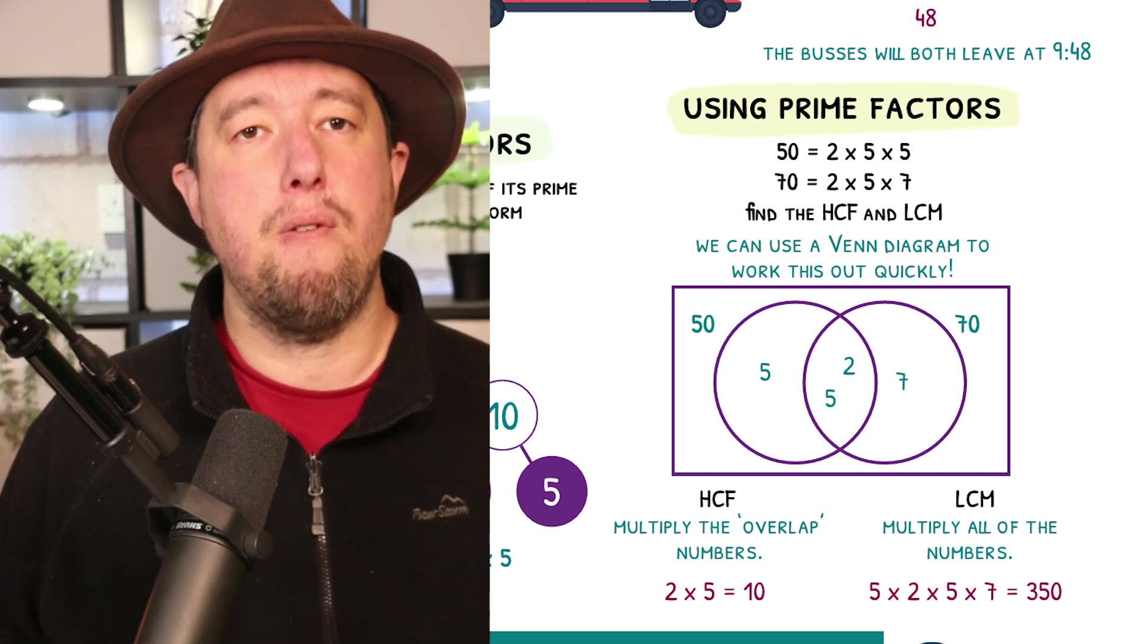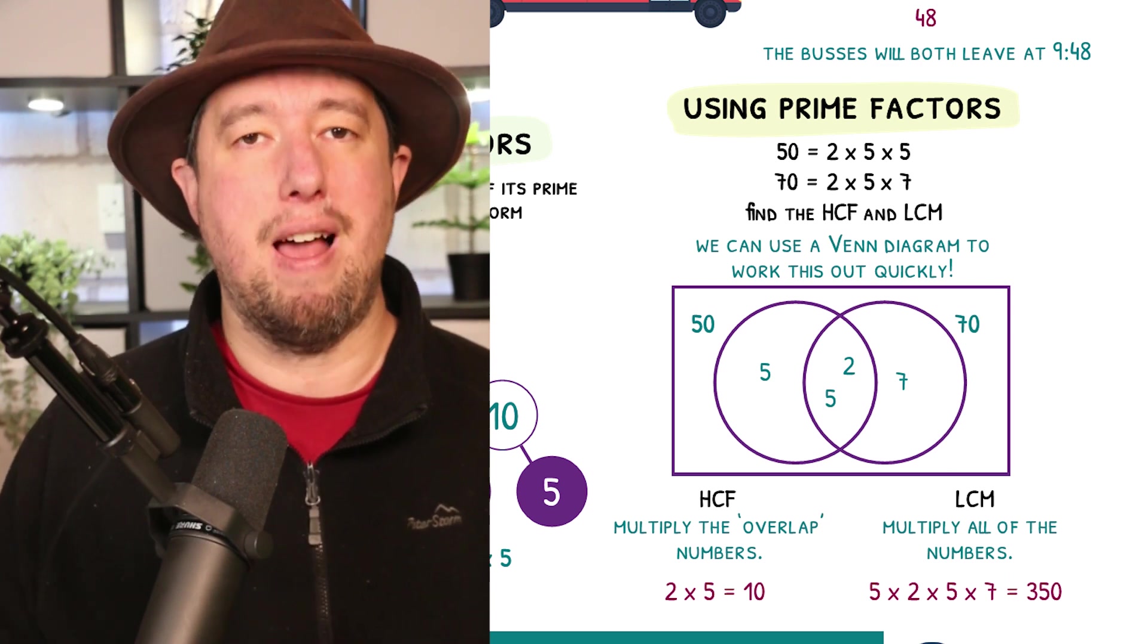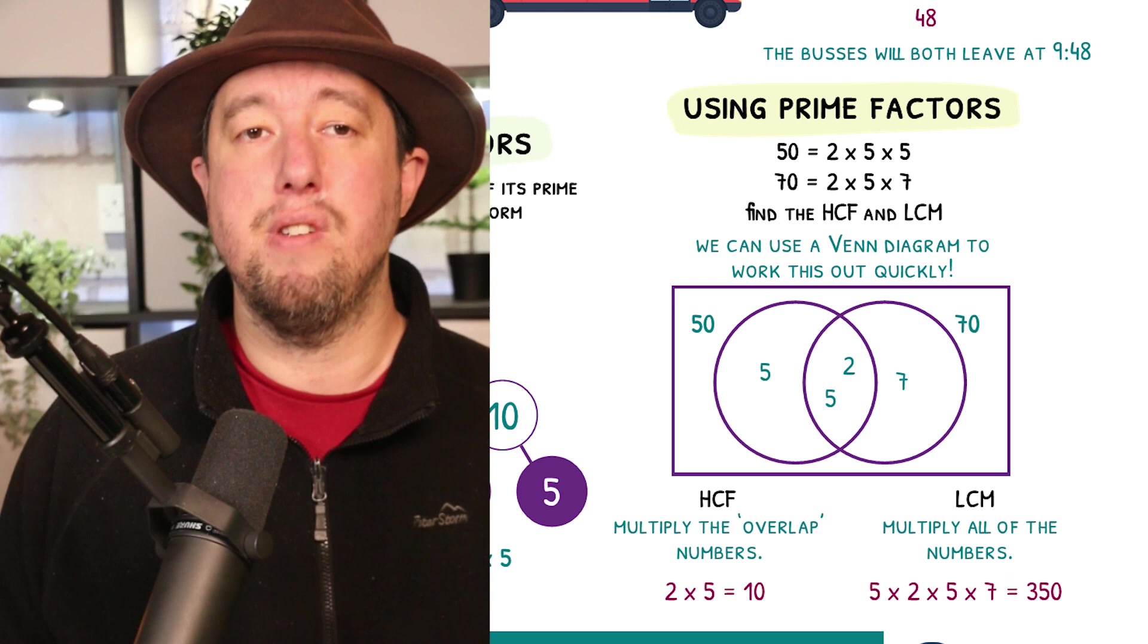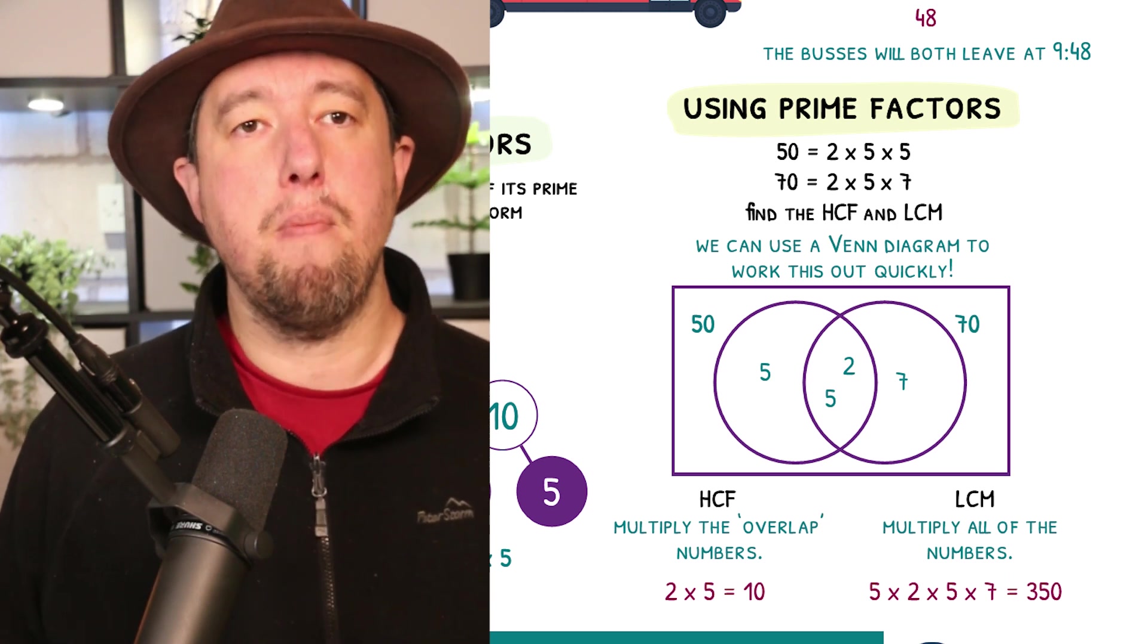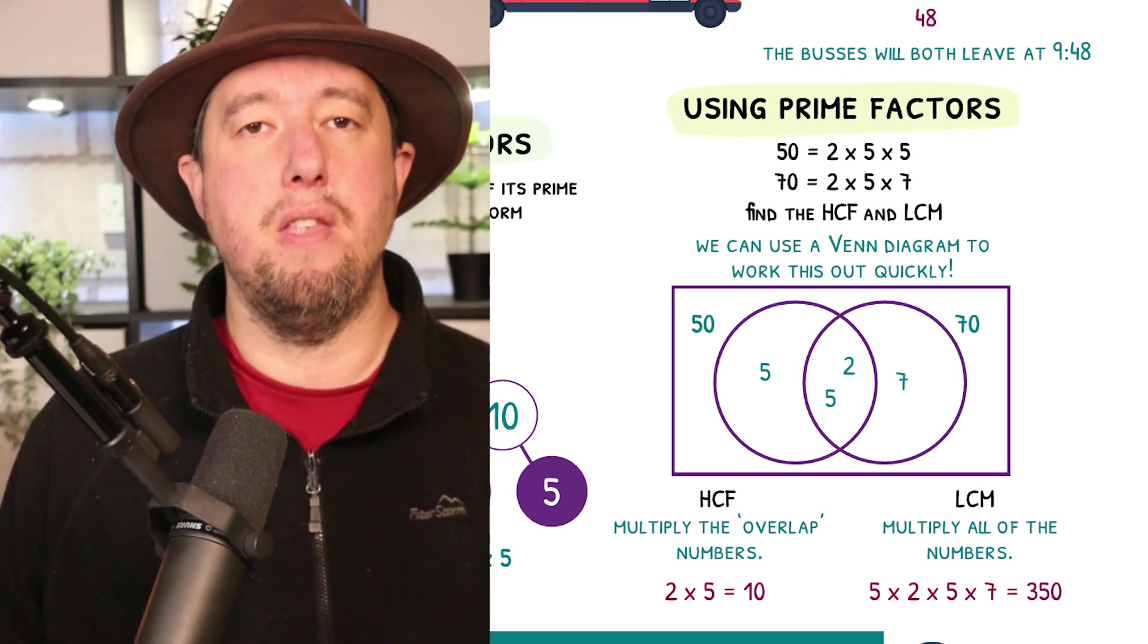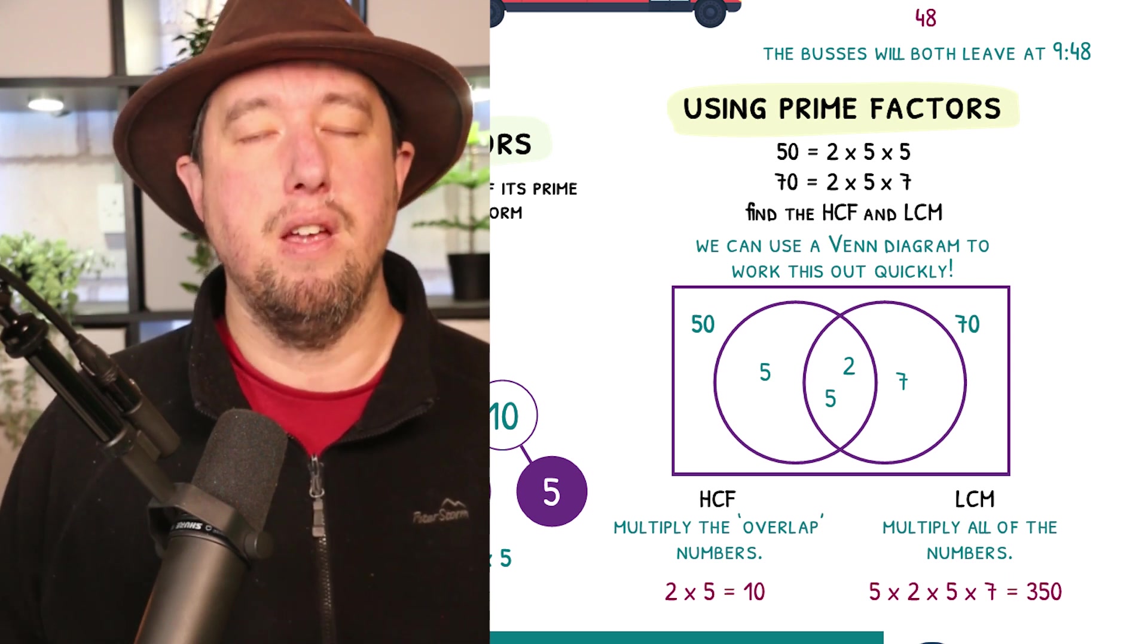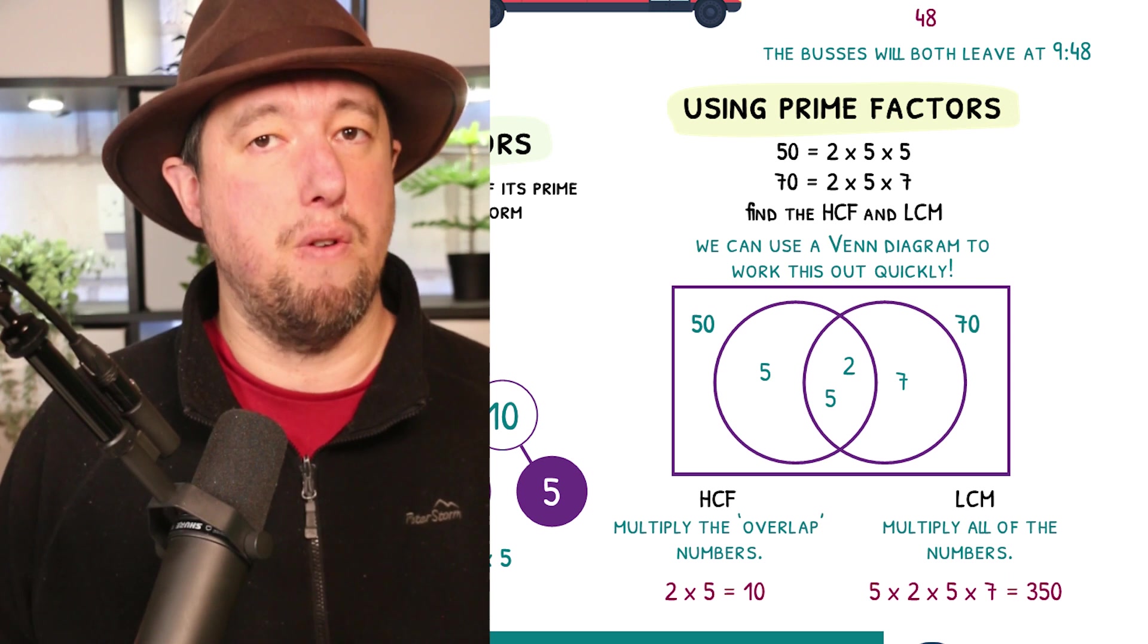The highest common factor can be found by multiplying the numbers in the overlap together. 2 times 5 is 10, so the highest common factor is 10. The lowest common multiple can be found by multiplying all the numbers in the Venn diagram together. 5 times 2 times 5 times 7, 350. So the lowest common multiple is 350.